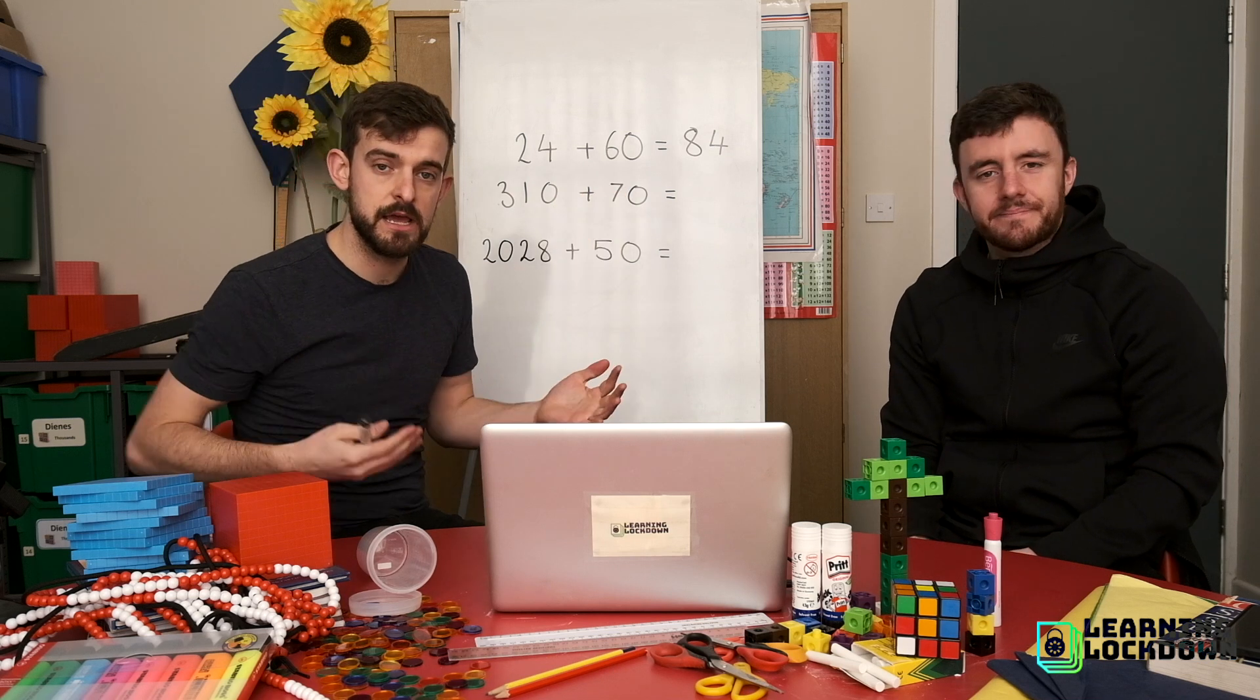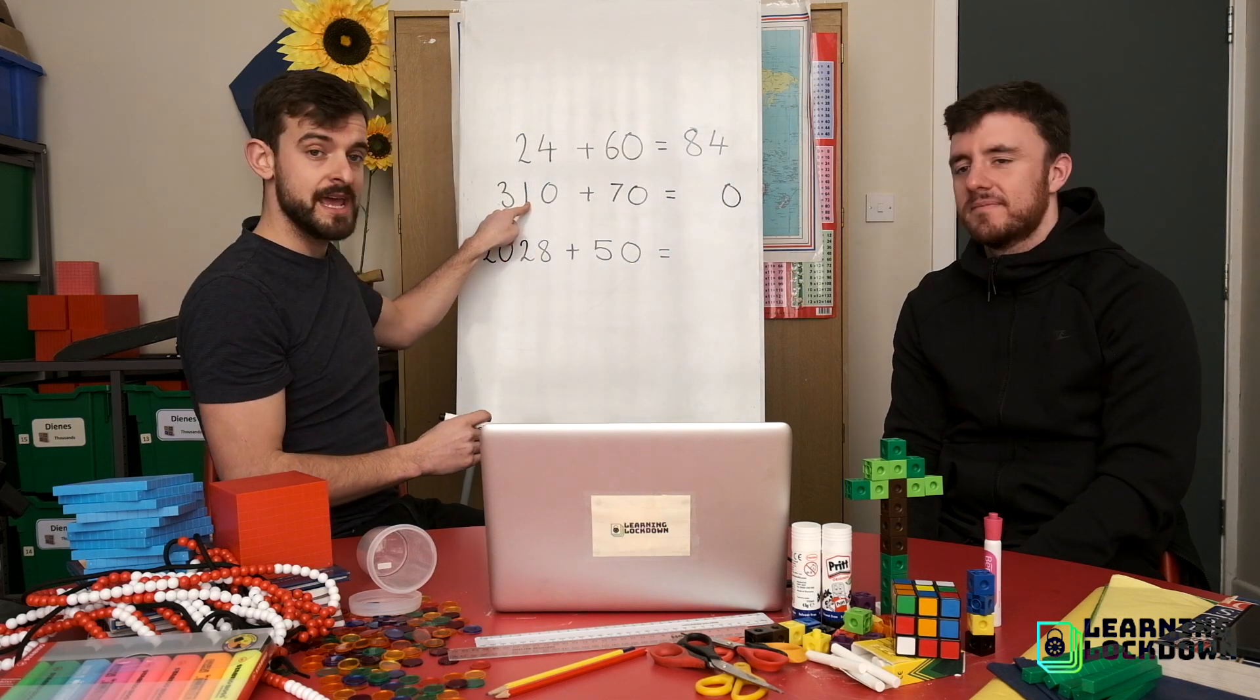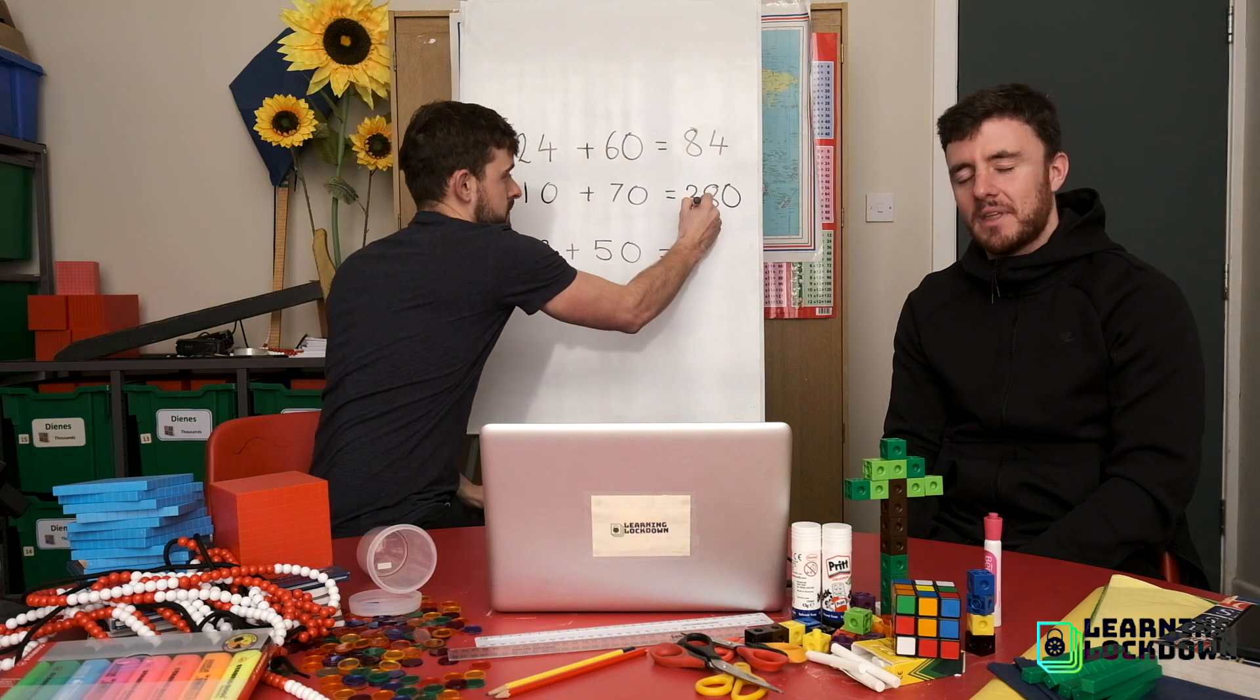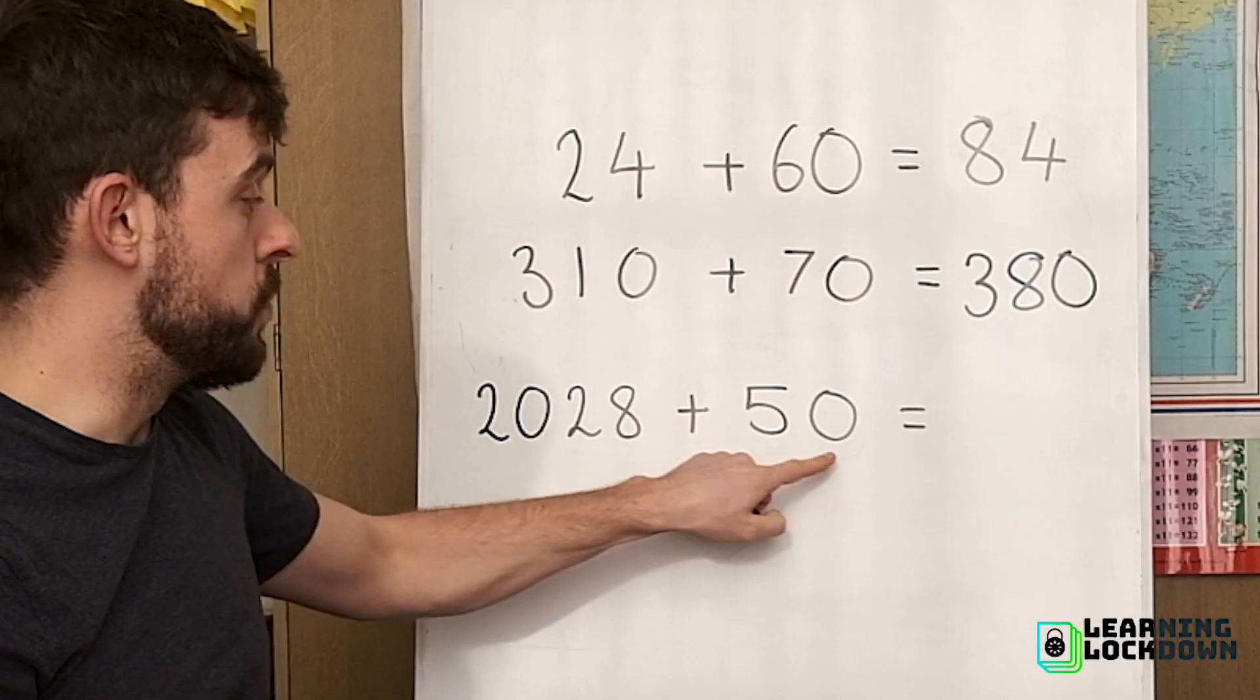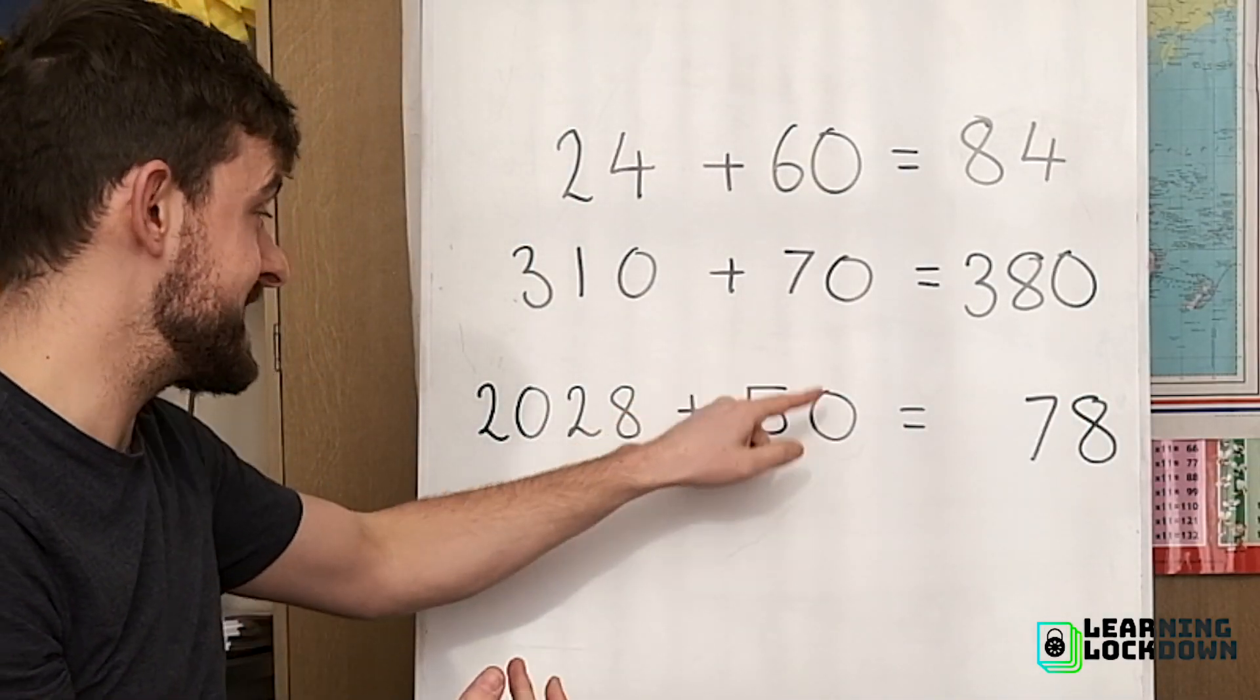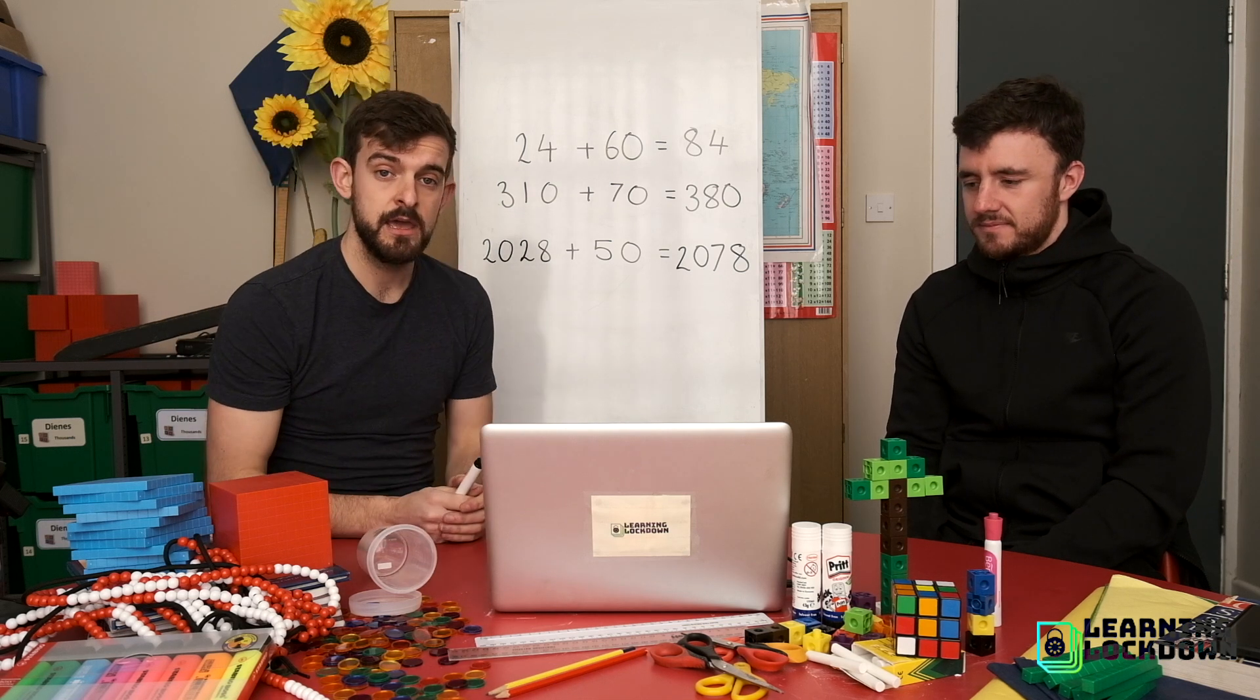And that process of just working through each column mentally is how we're going to do it. Let's go: zero add zero, zero ones. One ten add seven tens, eight tens. Three lots of hundred, there's no lots of hundred, so three add nothing, three. Easy, easy, easy. Only the tens are changing because we're only adding a lot of ten. Here we go: the ones won't change, eight add zero. The tens will: two lots of ten add five lots of ten. The hundreds won't change because we're not adding anything, so still zero lots of hundred. And the thousands is still going to be two thousand. So that is level one. Off you go on the sheet, there's a number of questions there where you're just changing the tens column.